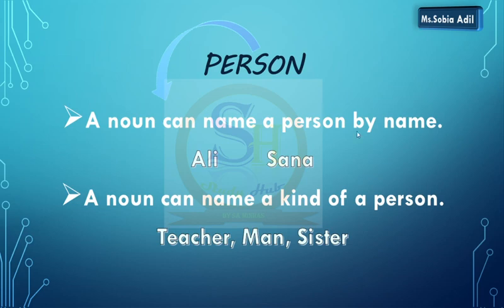A noun can name a person by name — for example, Ali, Sana. These are the names we use for persons. A noun can also name a kind of person. Hum persons ko bhi different categories mein categorize karte hain — teacher, man, sister. These are the names we use for those categories.